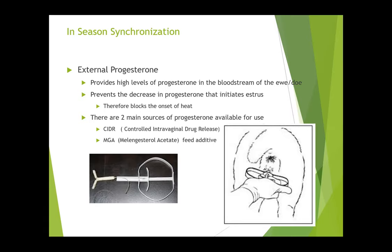There are two main sources. I'm going to talk about CIDRs. The information for MGA added to feed is present on the slide. Before we had CIDRs, large flocks were using MGA, but it can be very hit and miss and very difficult to manage the feeding so that every sheep gets the right amount. They have to be fed twice a day and it has to be put into a pelleted ration — it's too fine a powder in too small a quantity to just hand mix it. I don't think it's a viable option for smaller operations — probably if you're feeding less than a few hundred ewes.